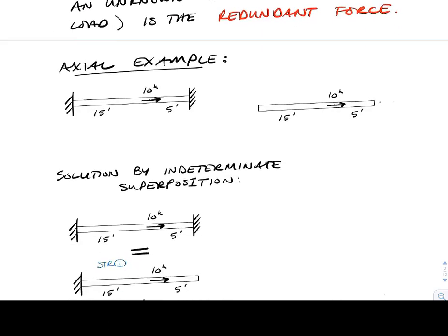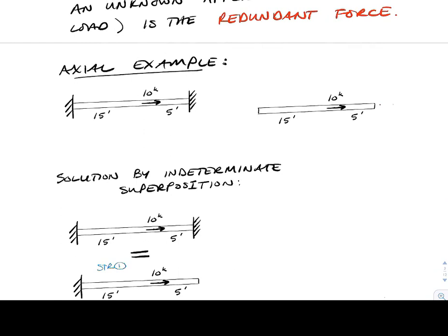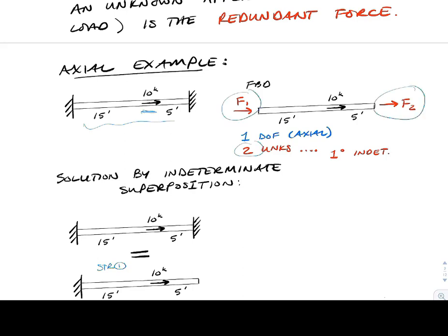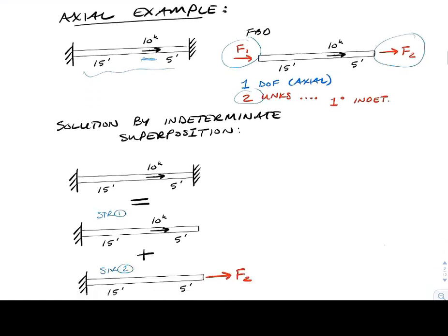Now let's look at an axial example. This beam is only loaded in the axial direction, so we focus on forces in that direction. The free body diagram has two external support forces with the same line of action, giving two unknowns: F1 and F2. Since there's only one degree of freedom in the axial direction, this is a 1-degree indeterminate structure.